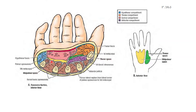Looking at this picture, we can make out that the mid palmar space lies deep to the palmar aponeurosis, and we can see the thenar space lying deep to the thenar eminence and the thenar muscles here.